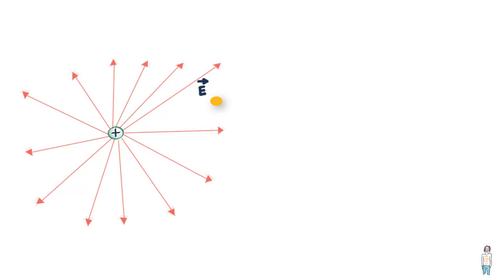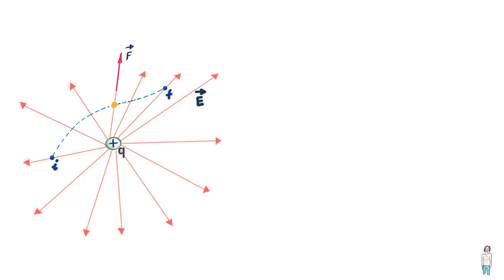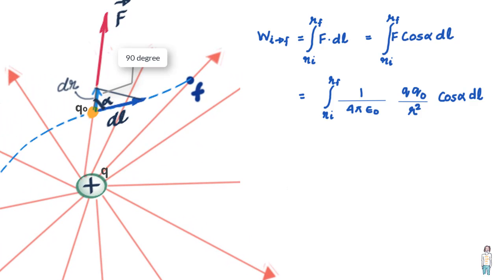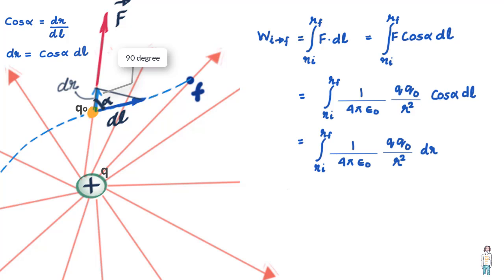If the test charge moves a distance dL and the angle between the force at that point and dL is alpha, then the work done is F dot dL, which equals F cos(alpha) dL. To find the total work done between R_I and R_F we simply integrate this expression. If you look at the figure closely, cos(alpha) equals dr divided by dL, or cos(alpha) dL equals dr.